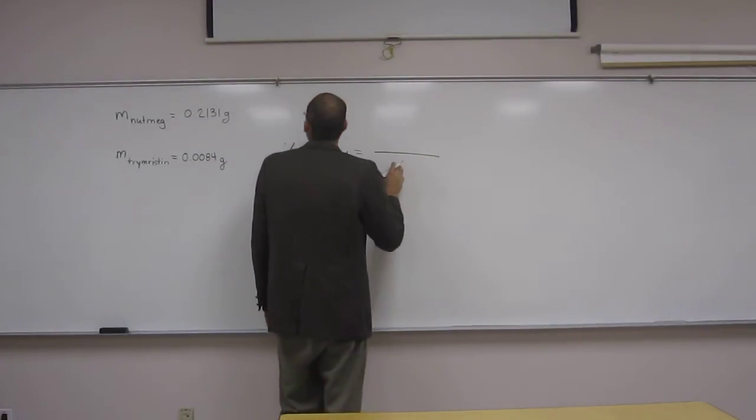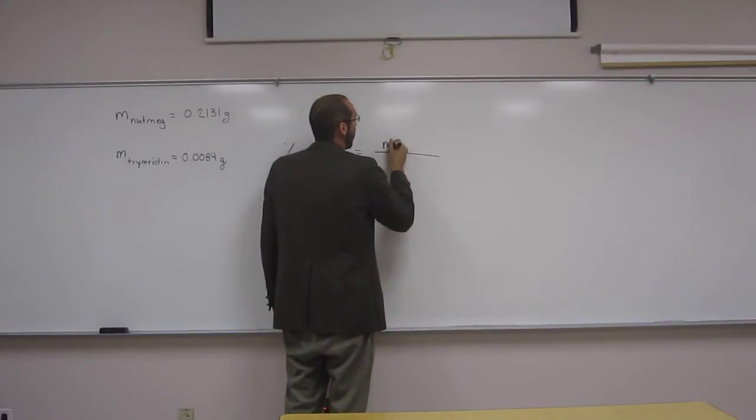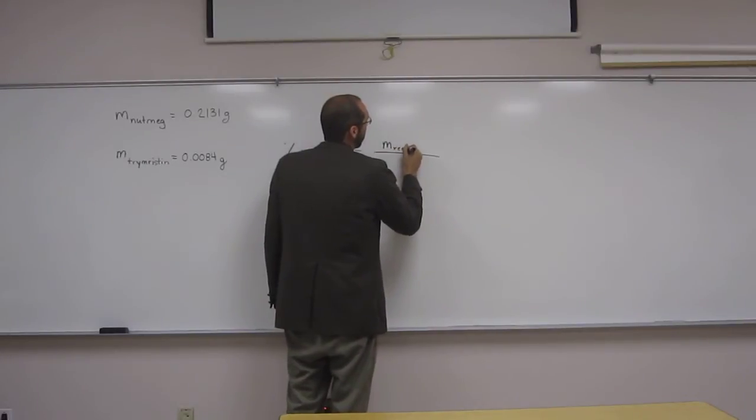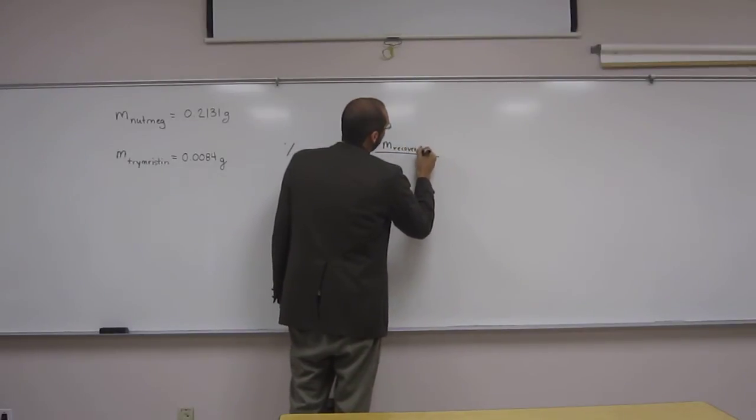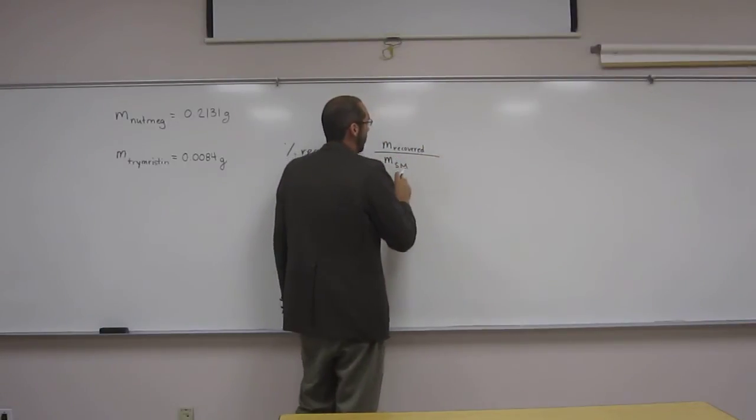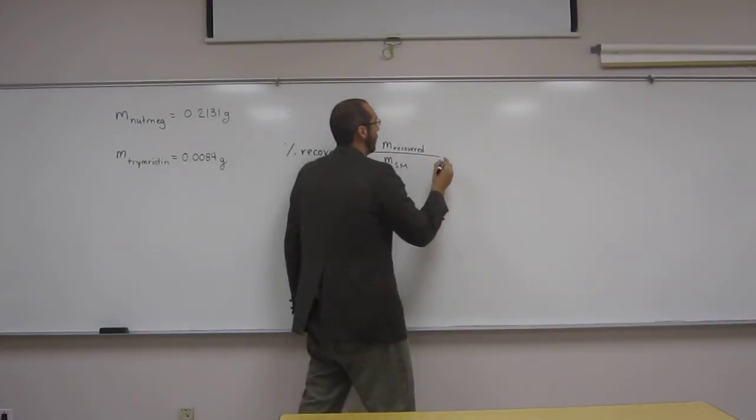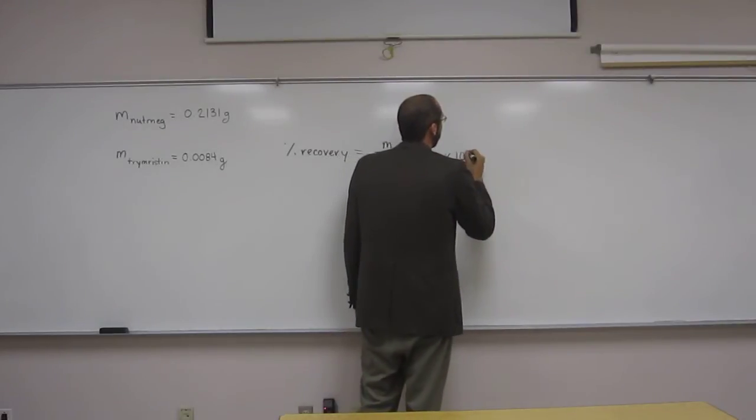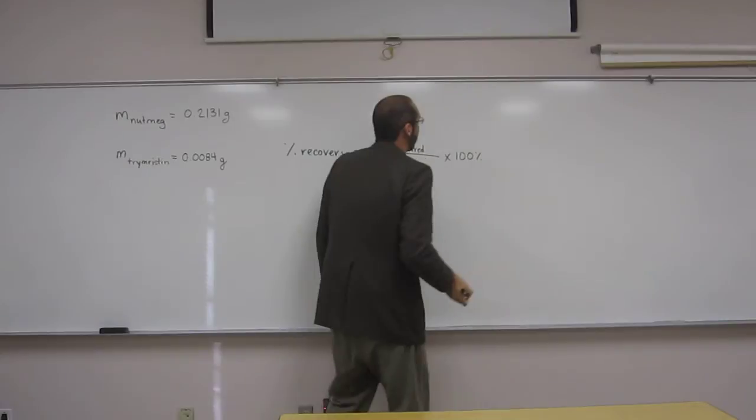So the percent recovery is going to be the mass recovered divided by the mass of the starting material, in this case nutmeg, times 100%. Okay?